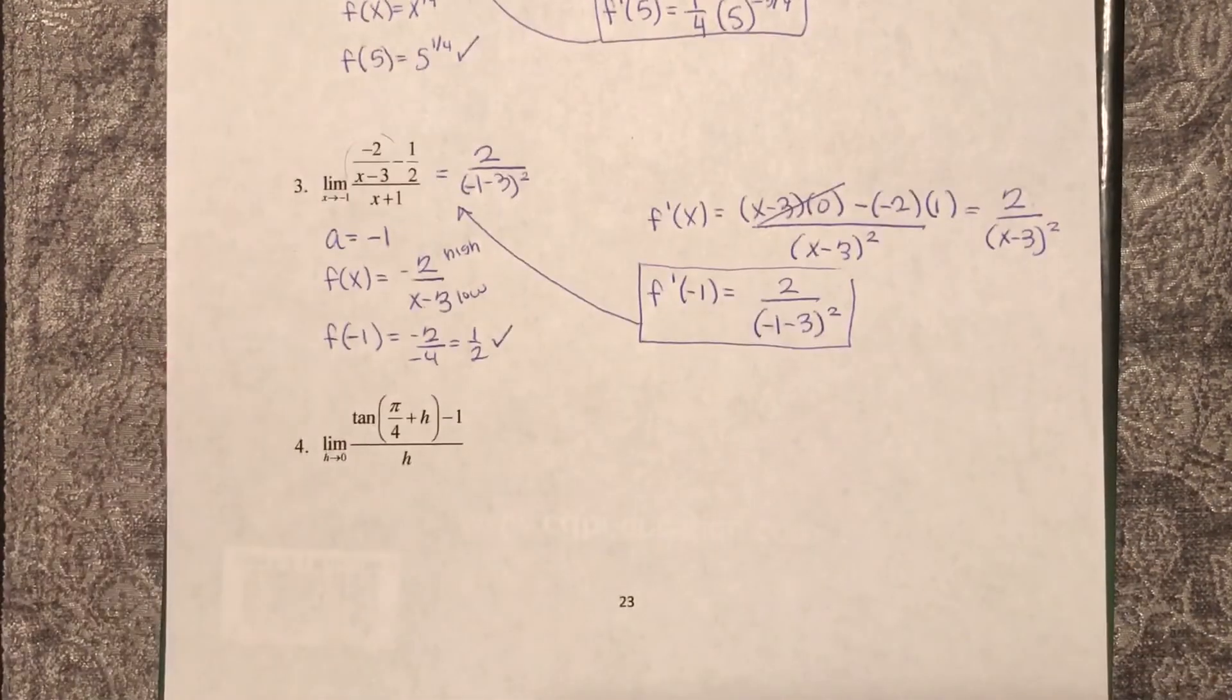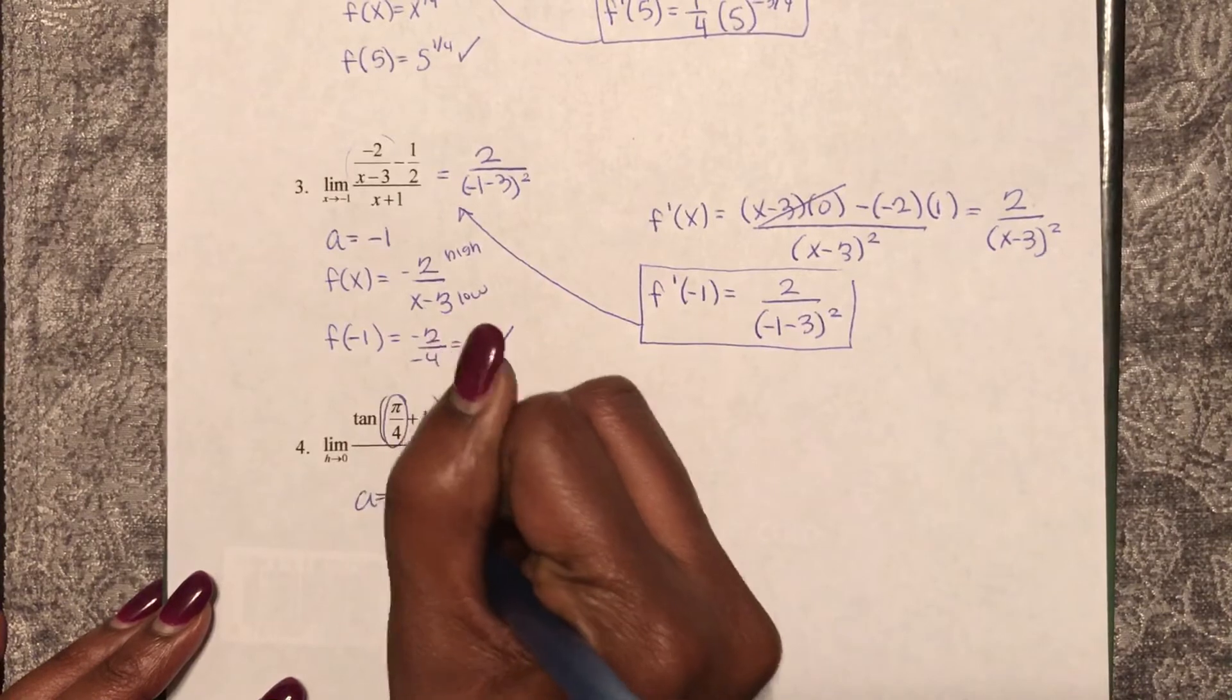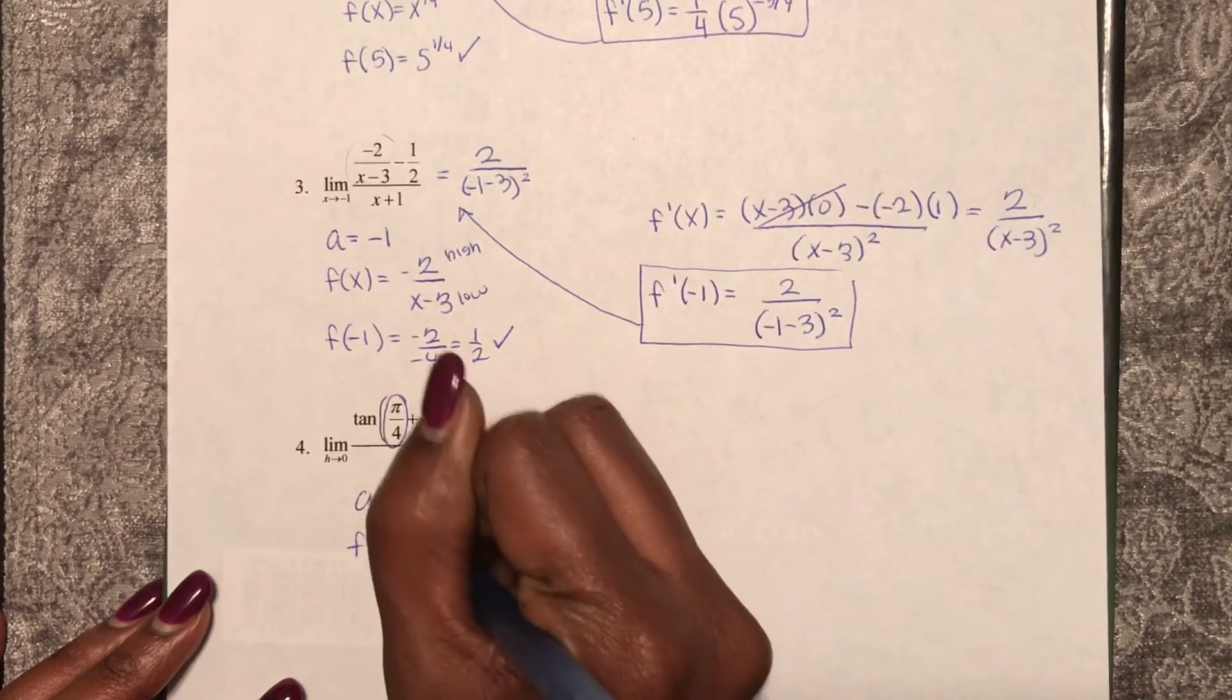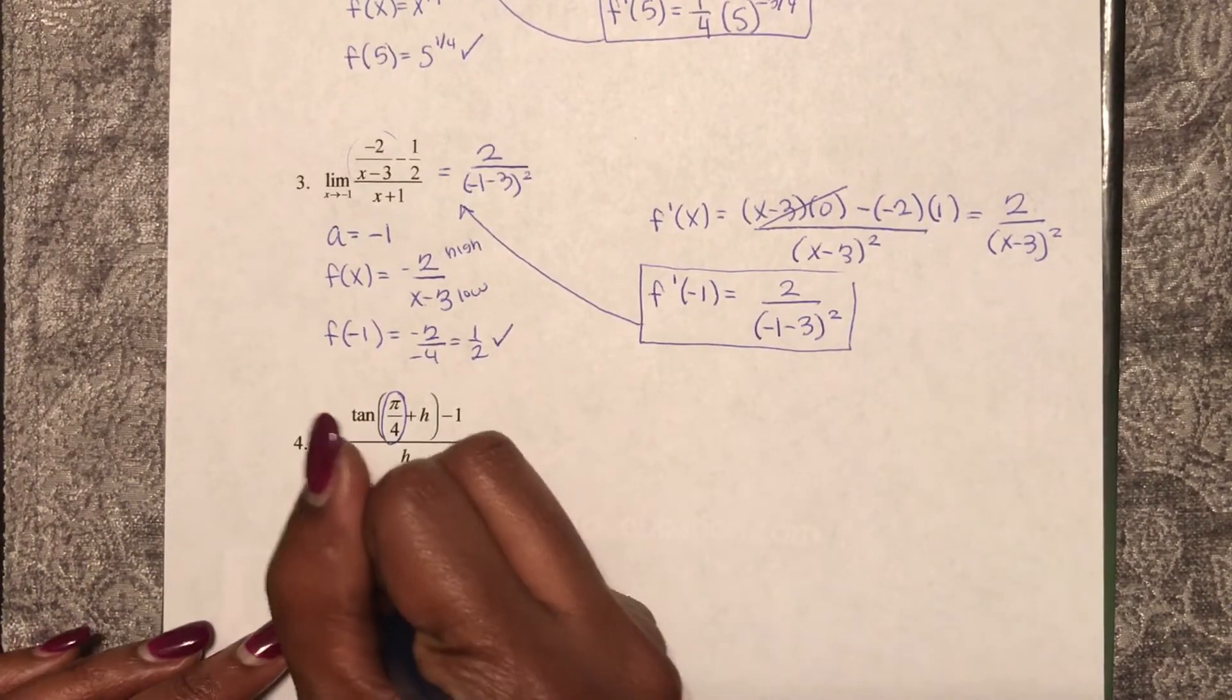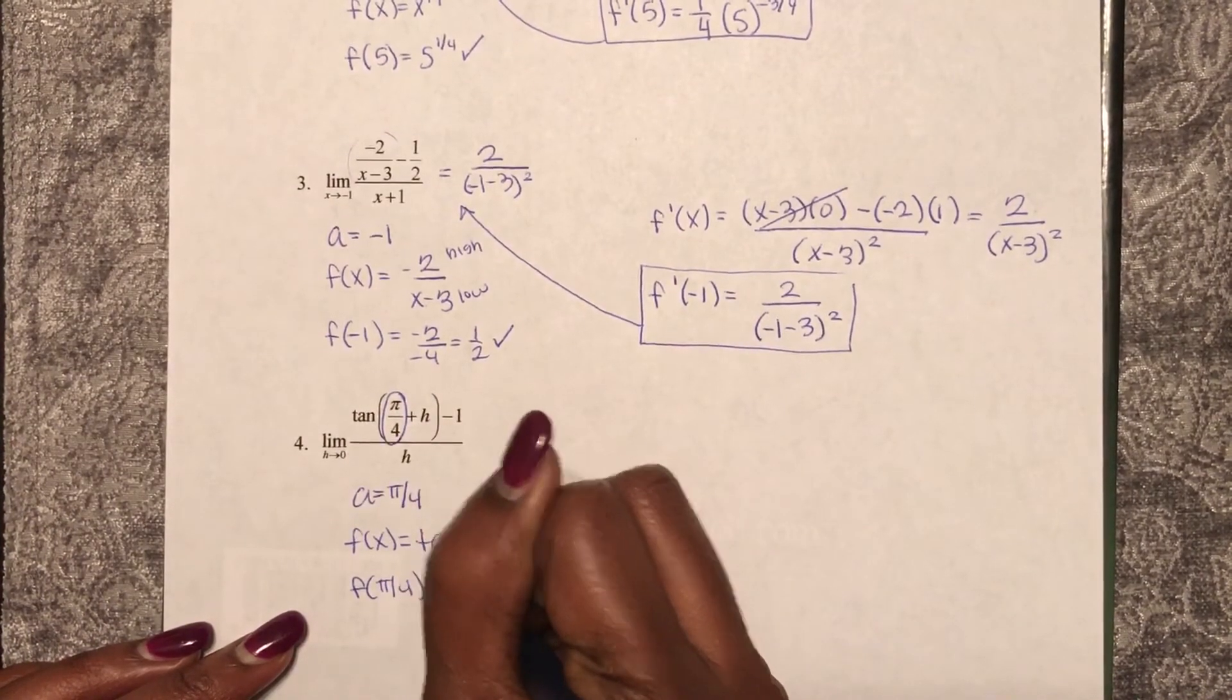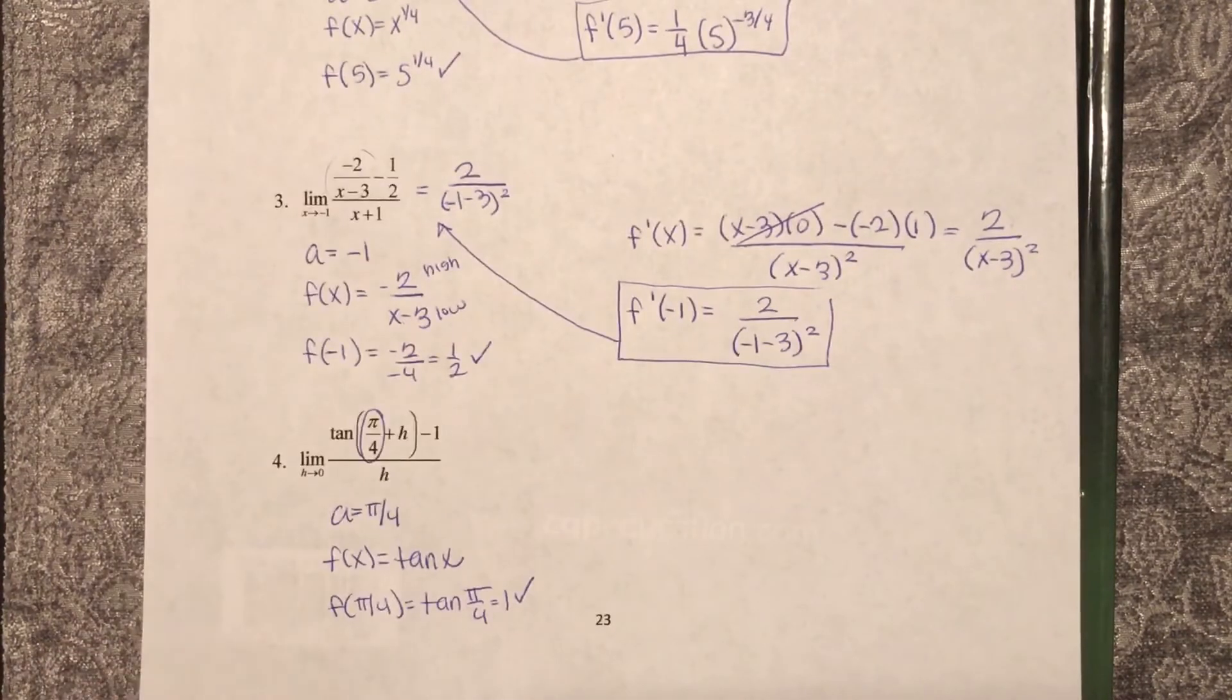Last but not least, I have another function. For me, I see that a should equal pi over 4. And if this is x, f of x is tangent x. So now, let's make sure f of pi over 4 is tangent of pi over 4, which is 1. So we know we did it correctly.